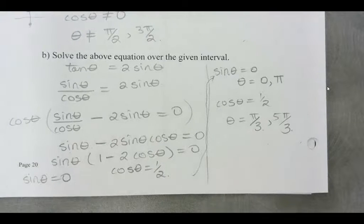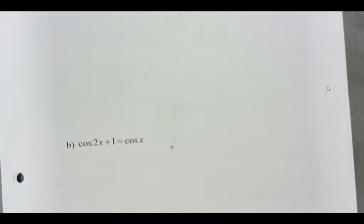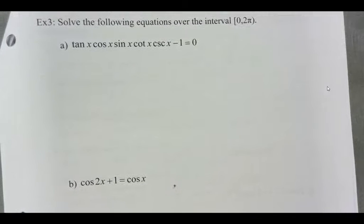This is a nice review of solving trig equations. The only difference is here sometimes we're substituting an identity to make it simpler. So let's try example three. There's a lot of stuff going on in here. Tan x, cos x, sin x, cotangent x, cosecant x, minus 1, equals 0.